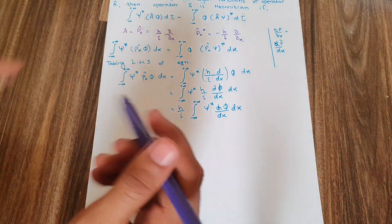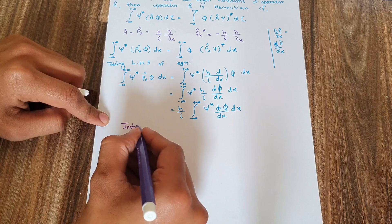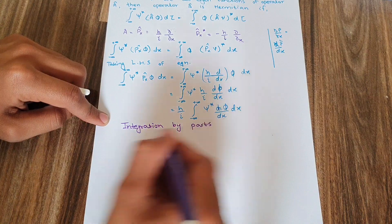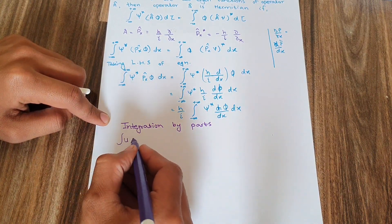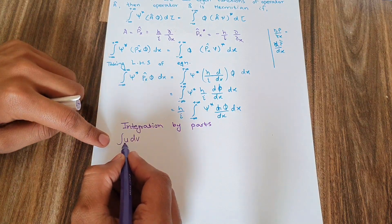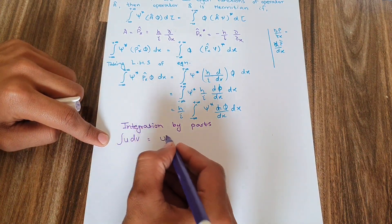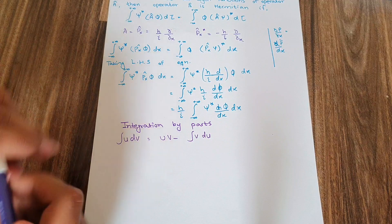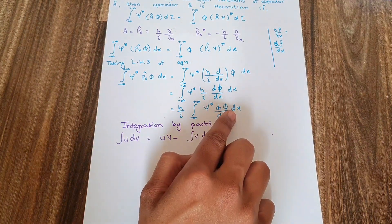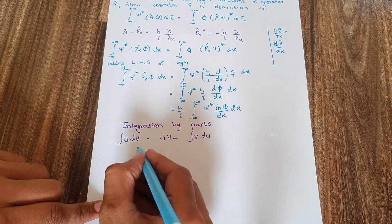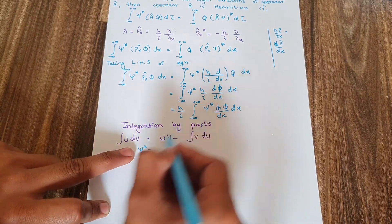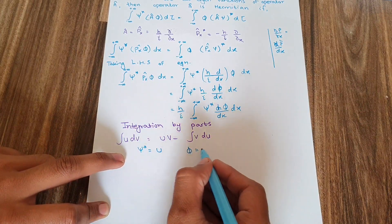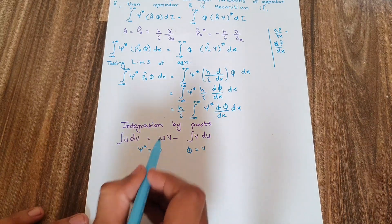This integral is solved using integration by parts. The formula states: the integral of u times dv equals u·v minus the integral of v·du. Here I have two functions: psi* and phi. I take u = psi* and v = phi.